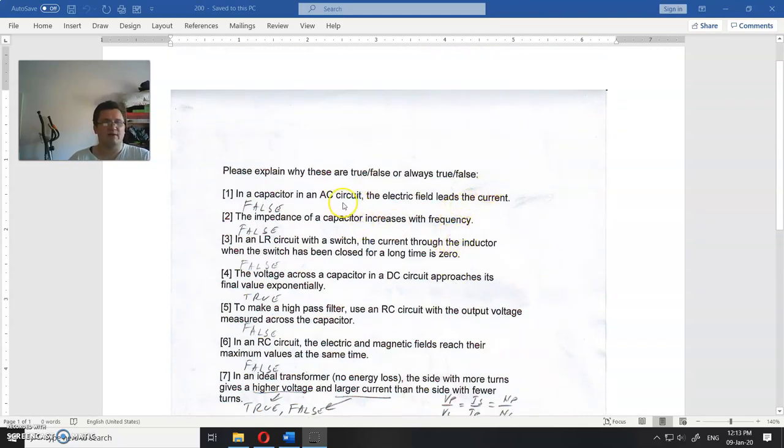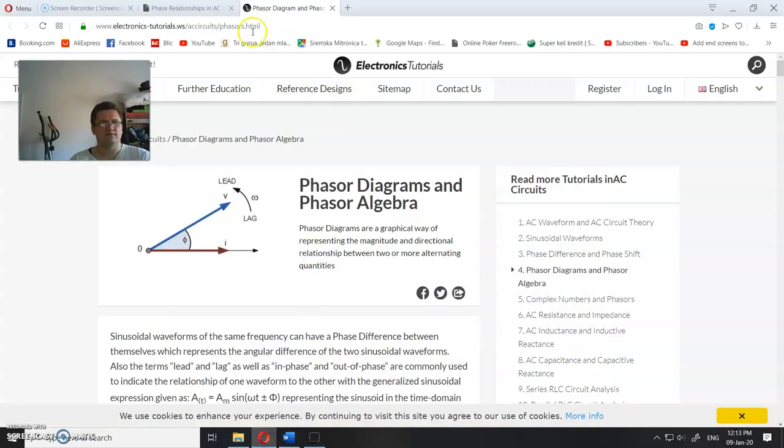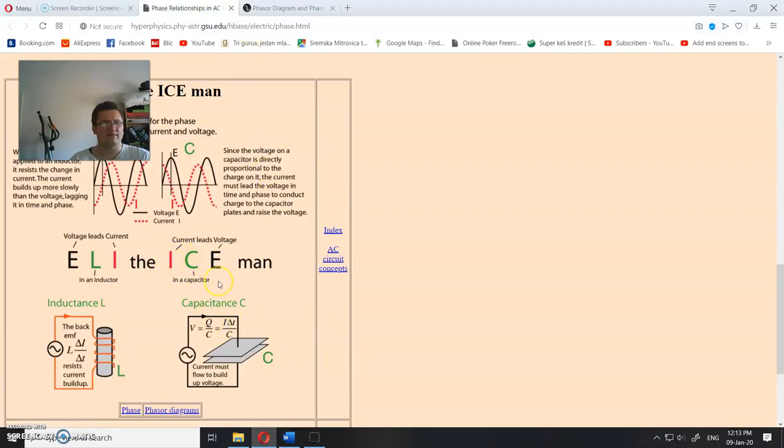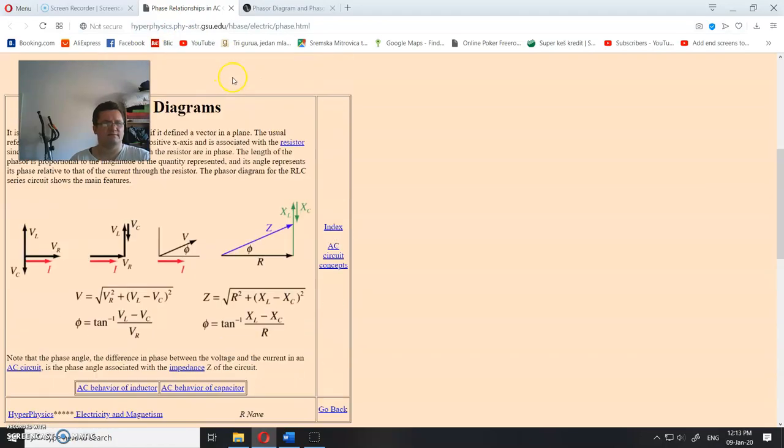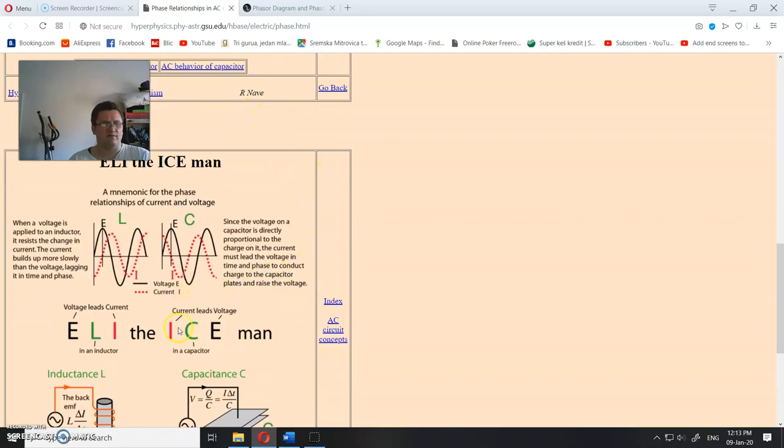Let us start from the start. Please explain why these are true false or always true false. In a capacitor in alternating current circuit, the electric field leads the current. Because capacitor, it's a current leads voltage. So when you have capacitors, current leads voltage.